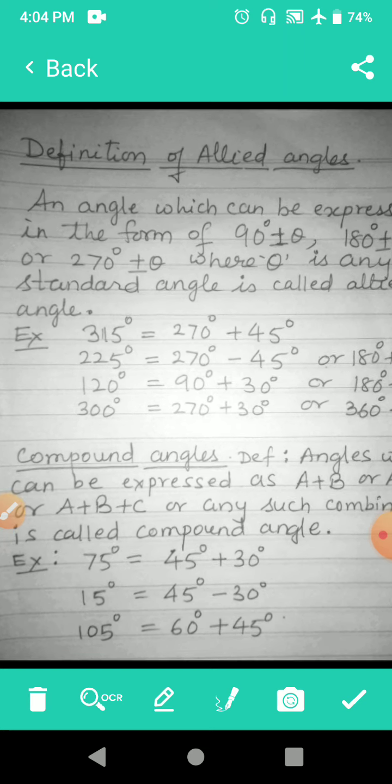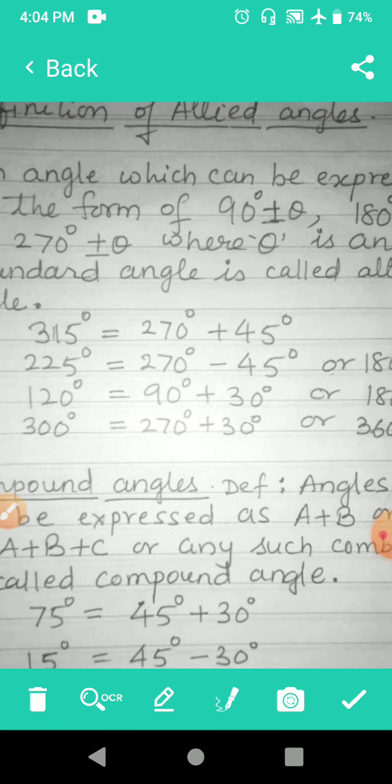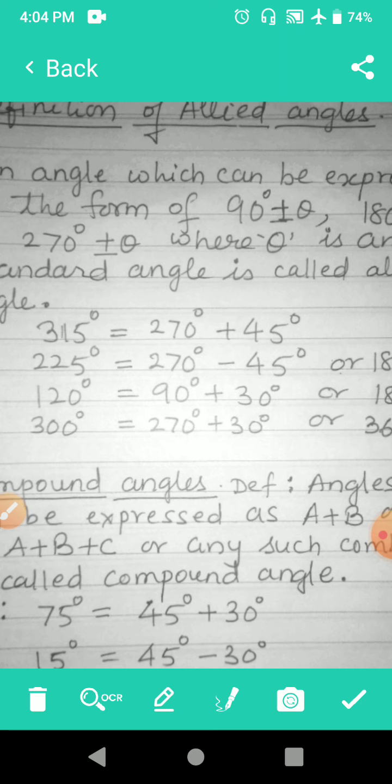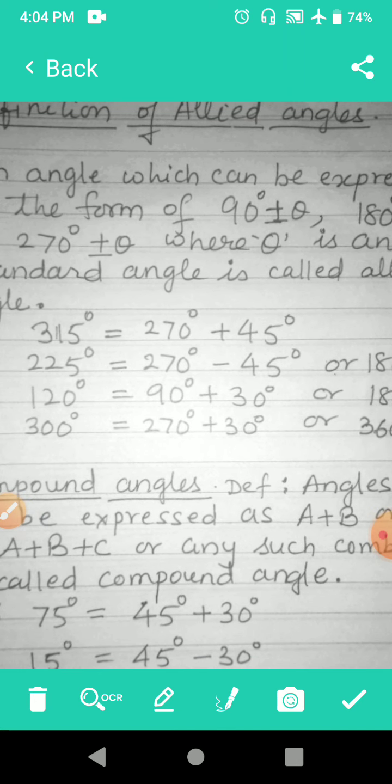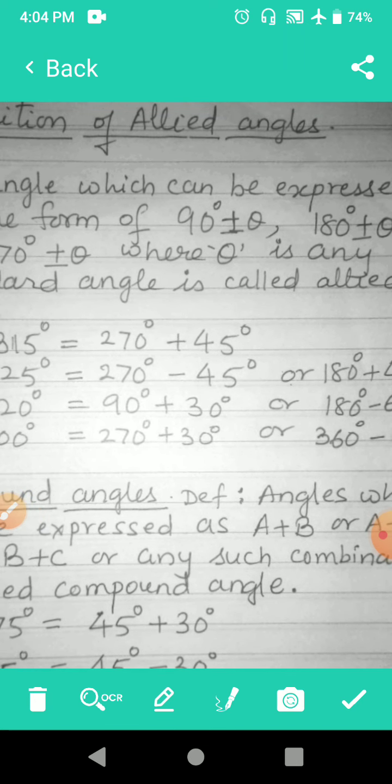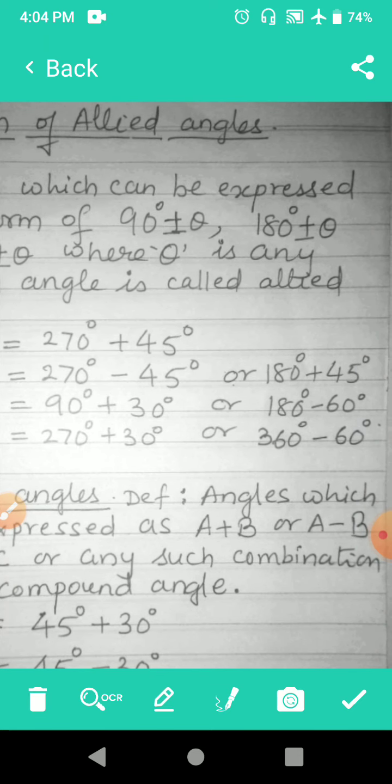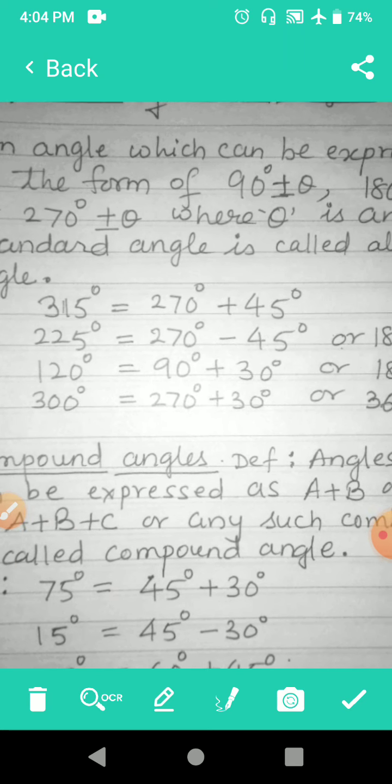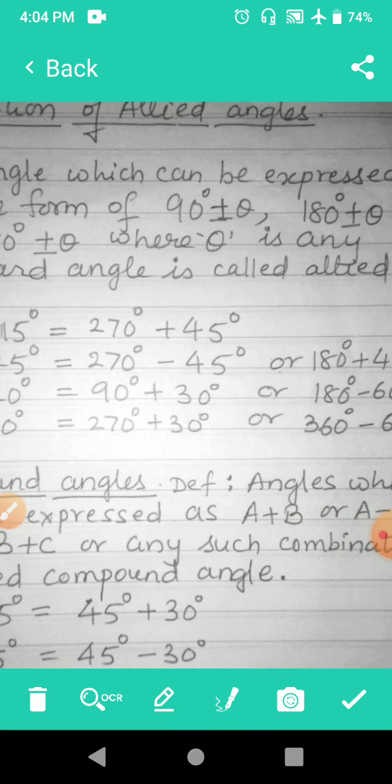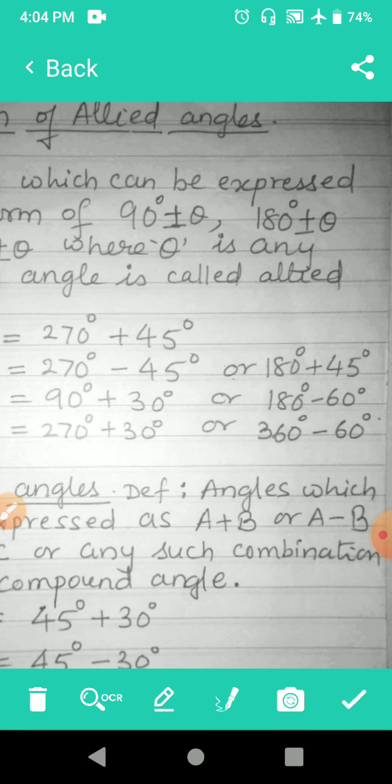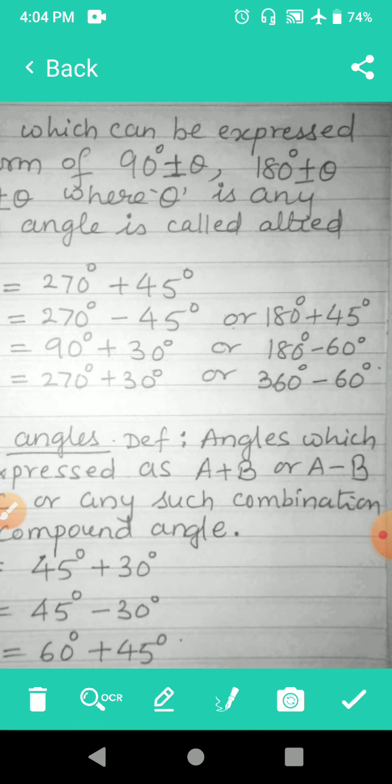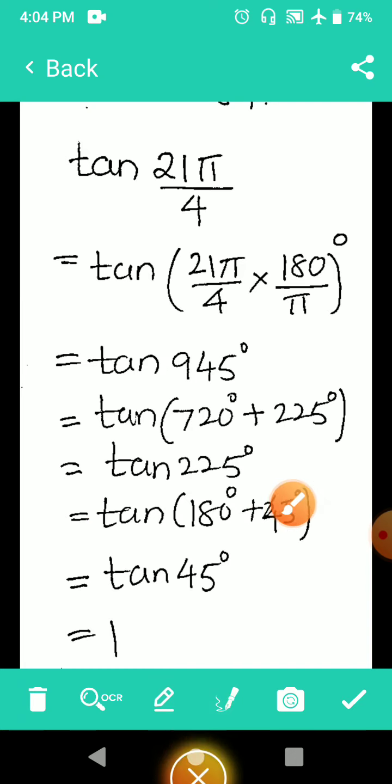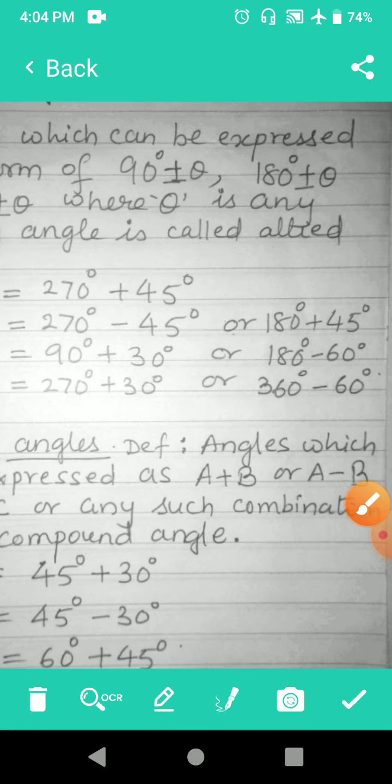For example, 315 degrees. 315 degrees can be written as 270 + 45 or 360 - 45. So 315 is 270 - 45, or you have 180 + 45, then you have 180 + or 270 - θ form. All these are allied angles.